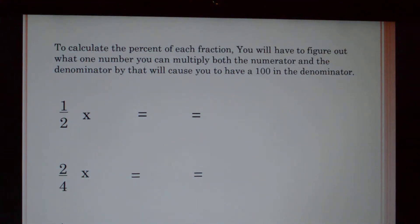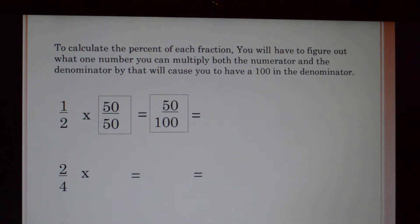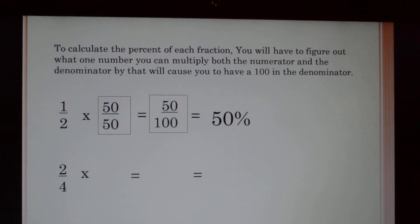To calculate the percentage of each fraction, you'll have to figure out what number you can multiply both the numerator and the denominator by that will cause you to have 100 in the denominator. I know if I multiply two times fifty, I'll get a hundred. So I'm going to multiply one half times 50 over 50, and that's going to give me 50 over 100, which is equal to fifty percent.